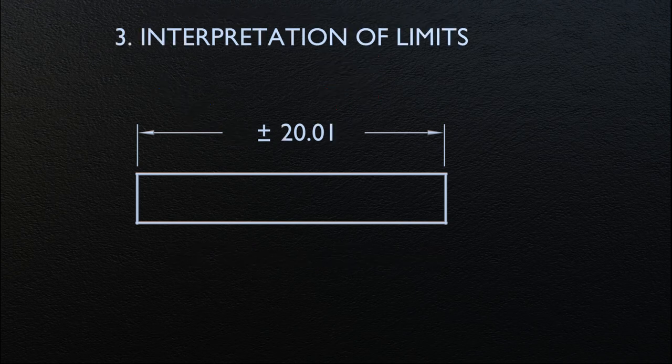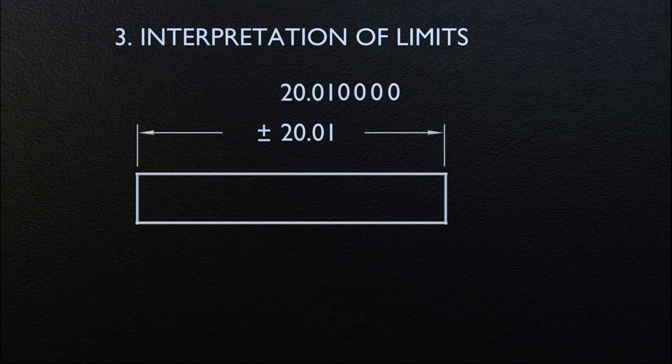Interpretation of limits: all limits are absolute. Dimensional limits, regardless of the number of decimal places, are used as if they were continued with zeros. In this case, 20.01 means 20.01000 and so on.